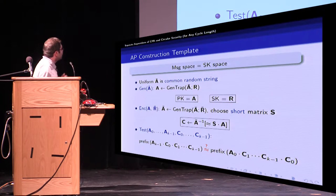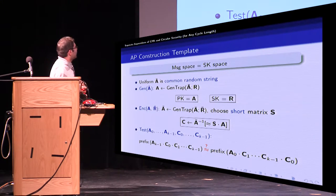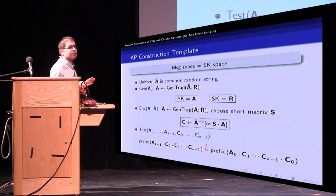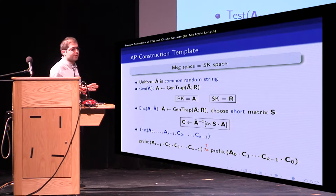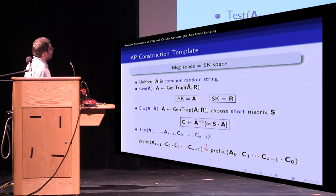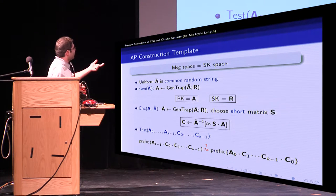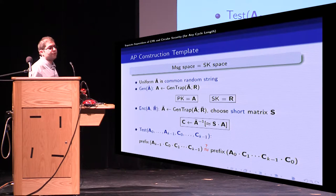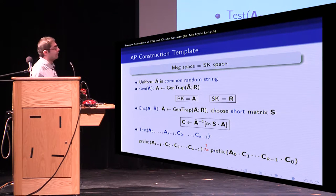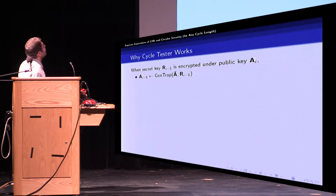And finally to test the cycle we simply compare prefixes of two products where each product is one public key multiplied by all of the ciphertexts. Note that here two public keys are arbitrary and we can use any two different public keys as long as they have different index.